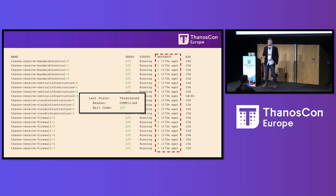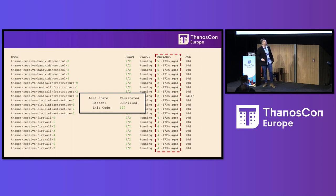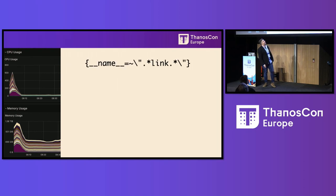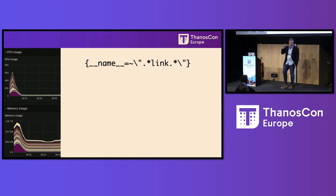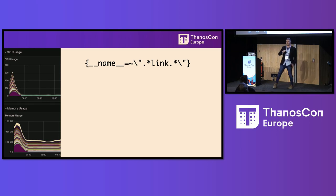That was really concerning because we felt secure that we had a hard tenancy pipeline — that shouldn't happen across tenants. The clue was in the resource metrics: the querier blew up. We dug in and found this series query hiding — the monster query.